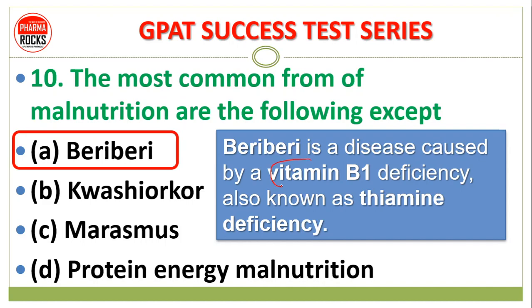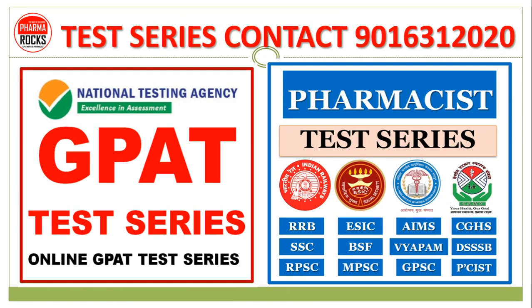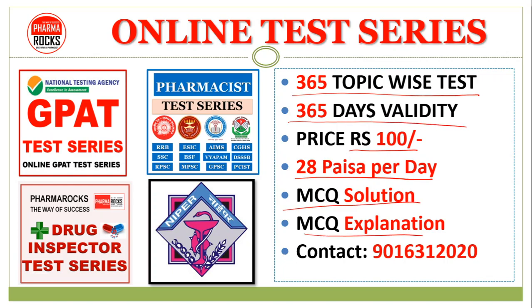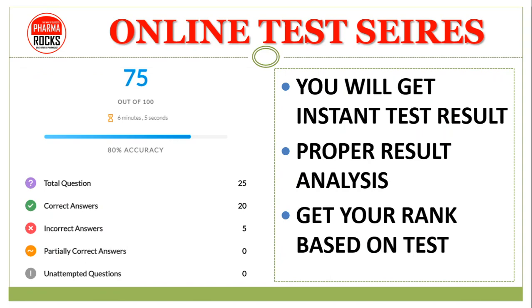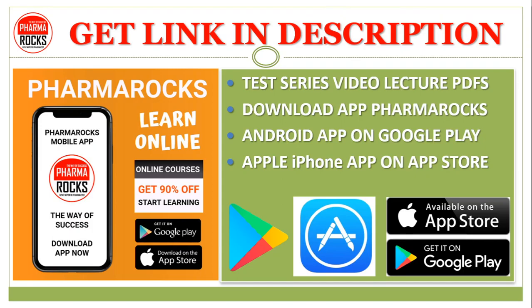Vitamin B1, also known as thiamine, and its deficiency causes beri-beri. Kwashiorkor and marasmus are protein energy malnutrition-related diseases. This was our GPAT success test series. On the PharmaRocks app, you get 365 topic-wise tests with MCQ solutions, explanation, proper result analysis, and instant test result, all for just 100 rupees. Download on Google Play or the App Store.